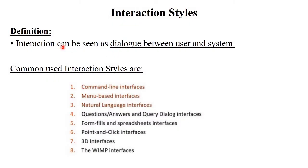The definition of interaction style: interaction can be seen as a dialogue between user and system simply. Interaction means communication — dialogue between user and the system, or human and the system. There are a total of eight commonly used interaction styles included in your syllabus: command line interface, menu-based interface, natural language interface, question answers and query dialogue interface, form fields and spreadsheet interface, point and click interface, 3D interface, and WIMP interface.